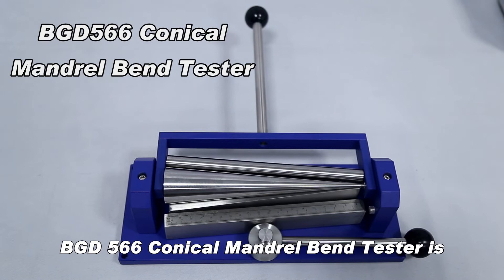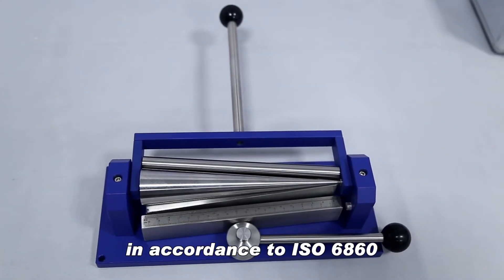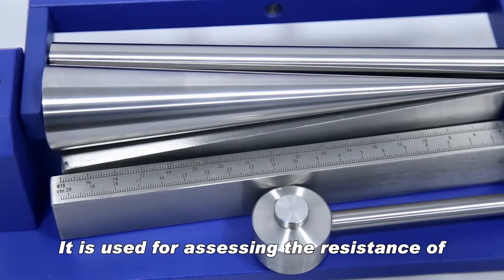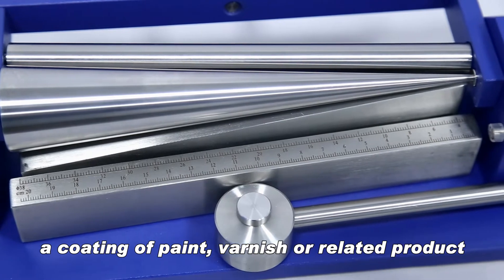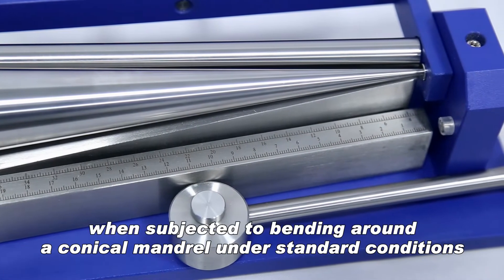The BGD 566 conical mandrel bend tester is in accordance with ISO 6860. It is used for assessing the resistance of a coating of paint, varnish, or related product to cracking or detachment from a metal substrate when subjected to bending around a conical mandrel under standard conditions.